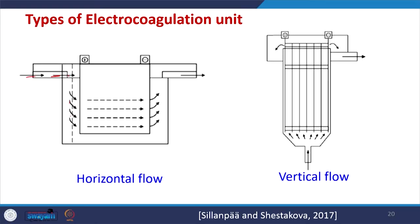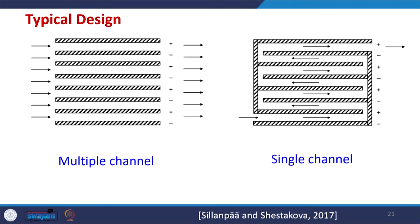Different types of electrocoagulation units are shown here. We have different configurations: vertical flow and horizontal flow. The electrodes are connected in either monopolar or bipolar mode, with water going up and after treatment settling down, with sludge settling at the bottom. The typical design has a positive and a negative terminal with water flowing through. There is a multichannel possibility and a single-channel possibility where water enters and treatment occurs as it passes through. These design units apply to electrooxidation as well.